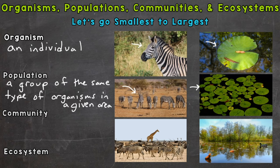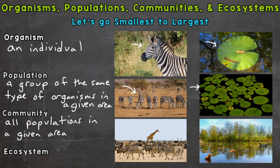Next we have community. A community consists of all the different populations within a given area — so all of the living things. We have a couple of different communities here. All of the living things in those given areas would make up the community. For example, all of the zebras, giraffes, ostriches, insects, bacteria, etc. are all members of this community here.